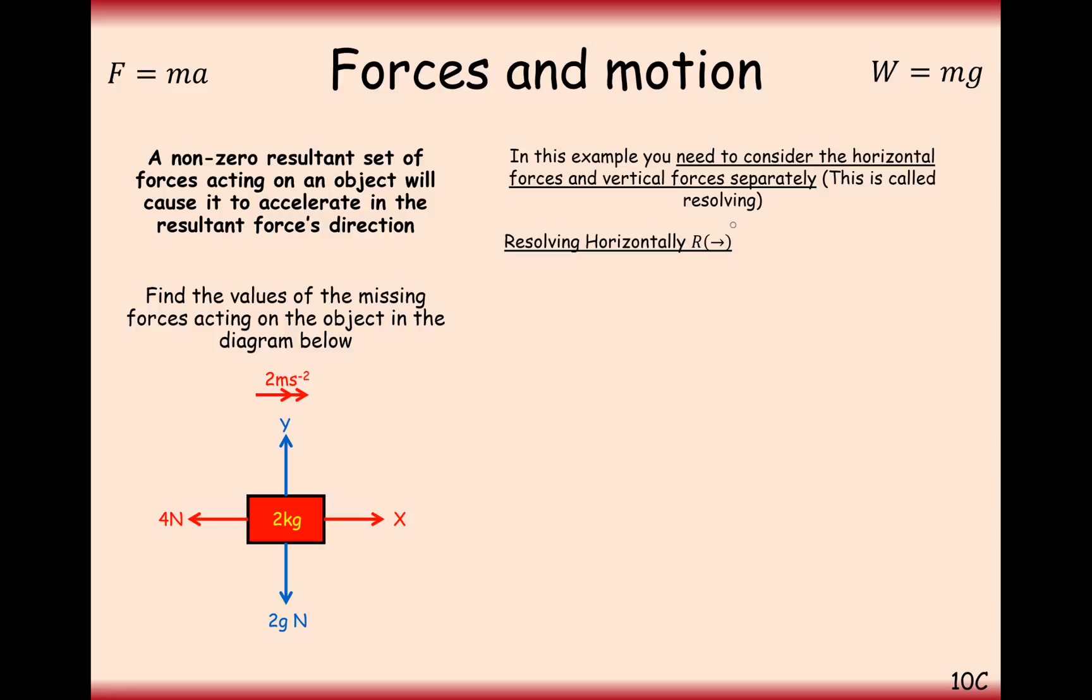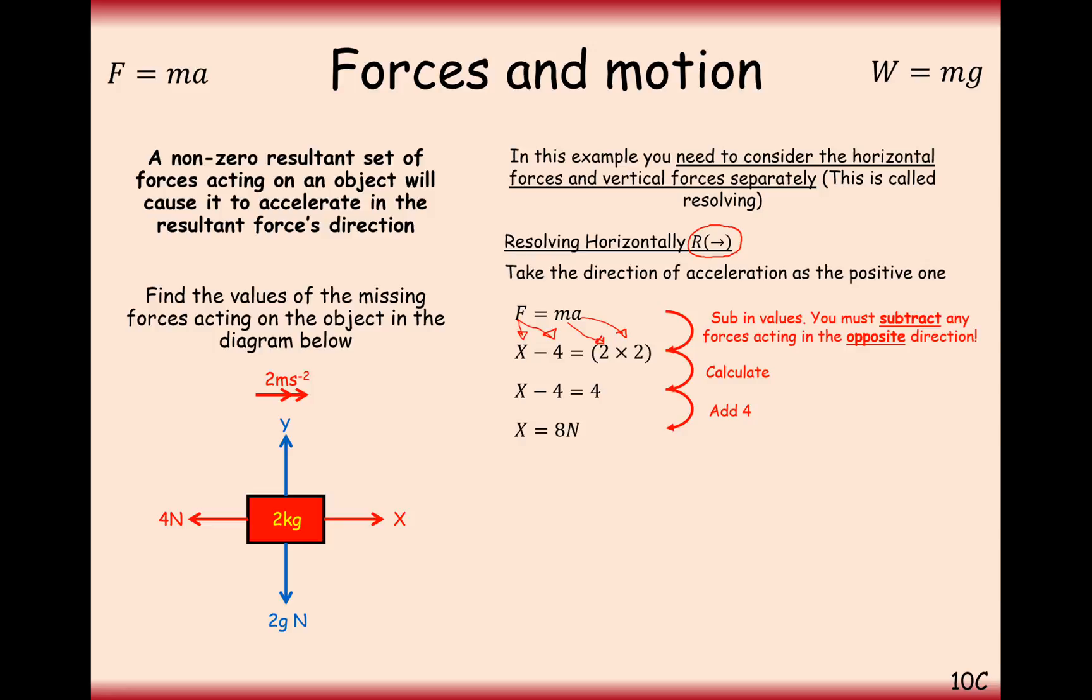Looking at the horizontal forces first, it's really good to start off by labelling the fact you're resolving in the horizontal direction. Taking F equals ma, we're going to set the right-hand direction to be positive, and we're going to put both of these forces onto the left-hand side, because that's where the forces go. Substituting in the forces here, we've got X acting in the positive direction, and we've got negative 4 acting to the left. All of your forces will go on the left-hand side of your F equals ma formula, and then you substitute in your m, which is 2, and your acceleration, which is 2. Simplifying this, we get X minus 4 equals 4, so therefore X must equal 8 Newtons.